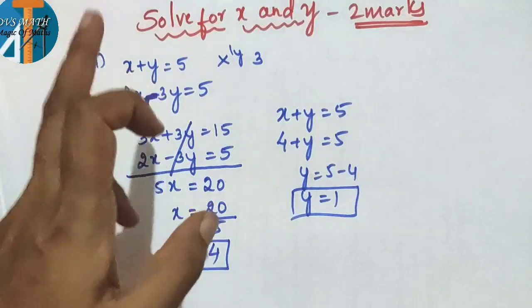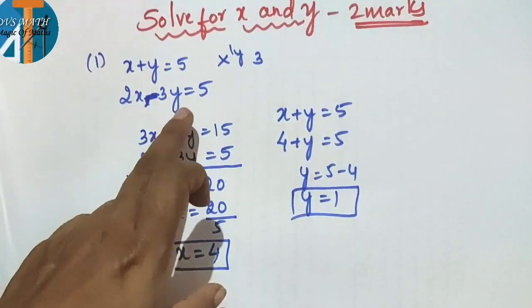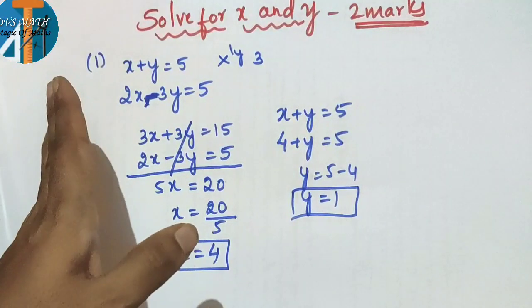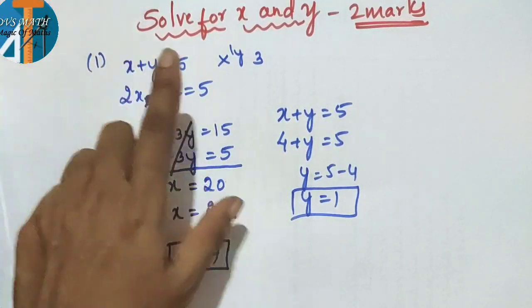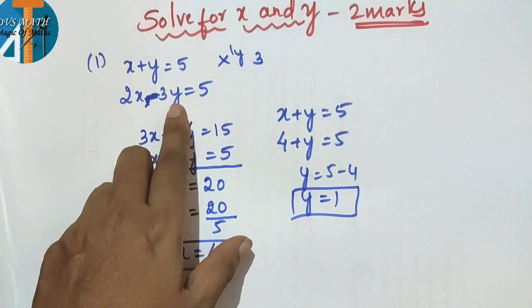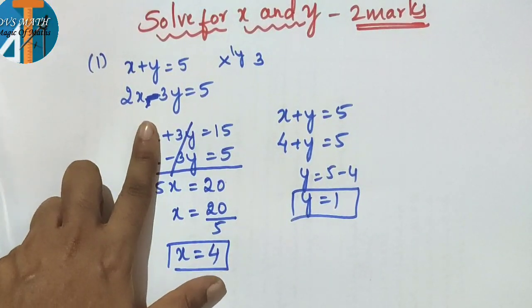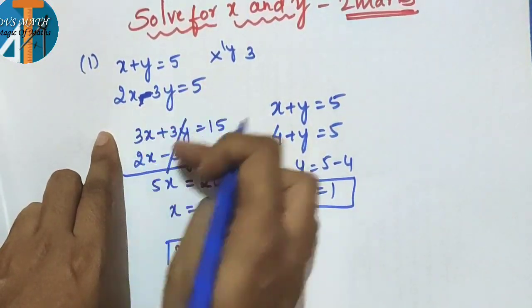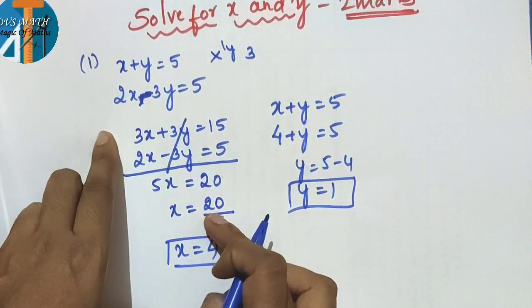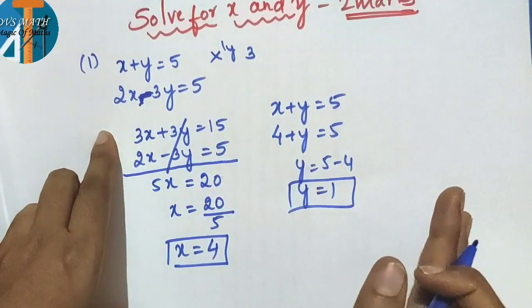To recap the first step: observe whether the coefficients of x and y are the same, then change any one coefficient to match — either make the x coefficients the same or make the y coefficients the same. Then observe the signs: same sign means subtract, opposite signs means add to cancel.